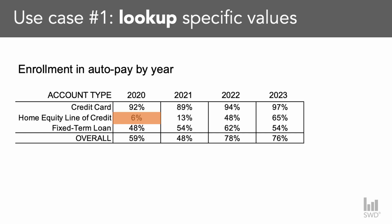The first reason to use a table is when your audience needs to look up specific values. For example, maybe they need to know it's exactly 6% in 2020 compared to 13%, 48%, or 65%. That level of detail can be a reason to use a table because your audience needs it.